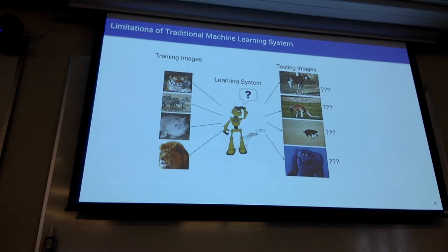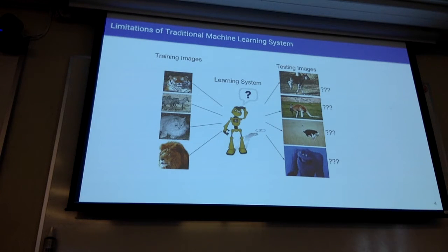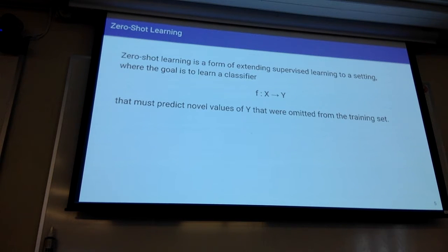But imagine a scenario where you are training your system with images of tigers, zebra, cat, and lion, but during testing you are giving it images of okapi, kangaroo, ostrich, or maybe a yeti. So how will your system behave then? This is considered in zero-shot learning — our goal is to build a model which can classify instances of classes that were unseen during training.